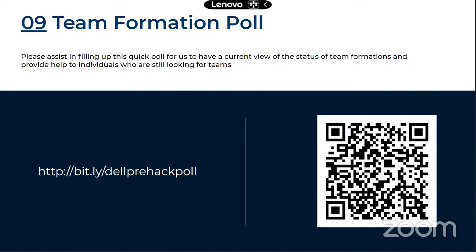Coming to team formation: some of you have teams already, some are still looking. We have a team formation channel on Slack with participants already posting. We also have a team formation roster for you to fill out. For right now, please scan the QR code or go to the bit.ly link on your screen to let us know your team status — this helps us curate and match teammates more effectively.